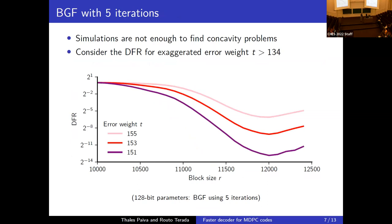They use a robustness test against BGF by applying it to exaggerated error rates — using t values larger than what BIKE proposes. In this simulation, even with five iterations BGF does not appear concave; it is clearly not concave for these larger t values. It is difficult to say definitively whether this implies BGF is not concave for t equal to 134.